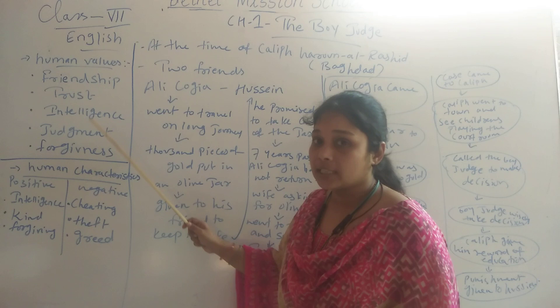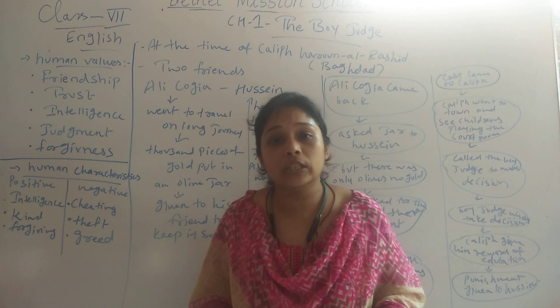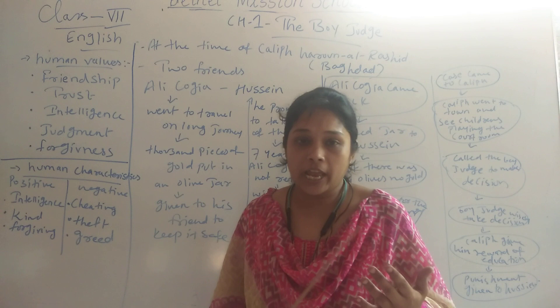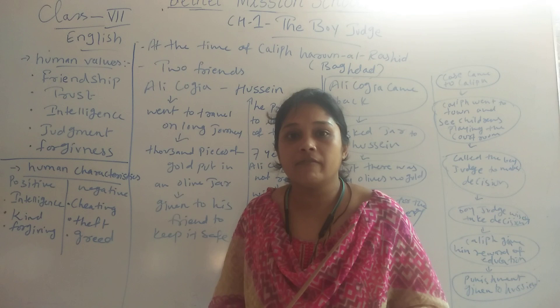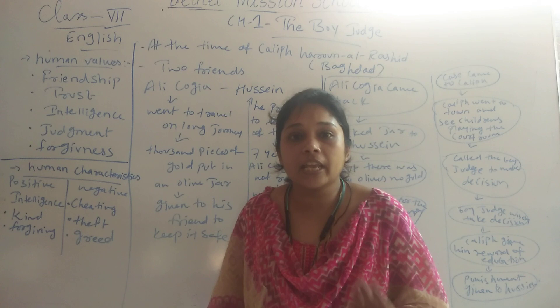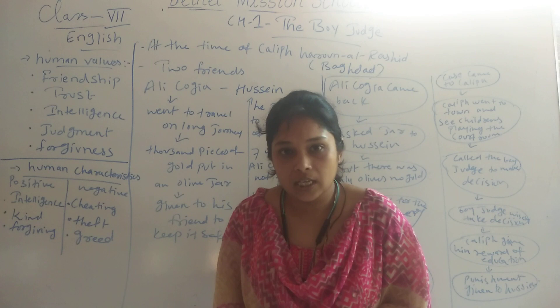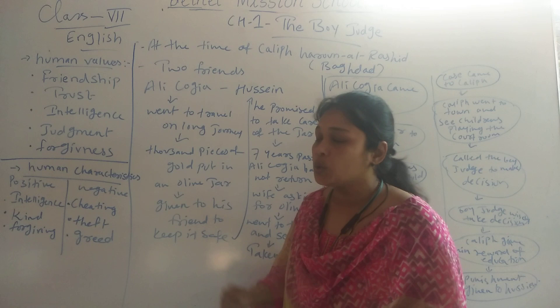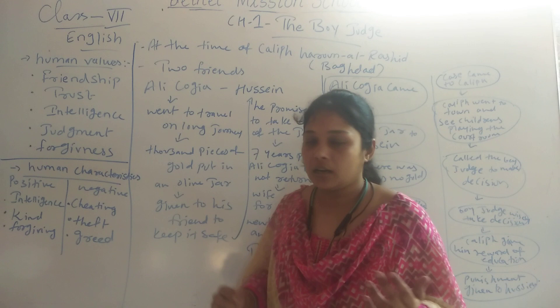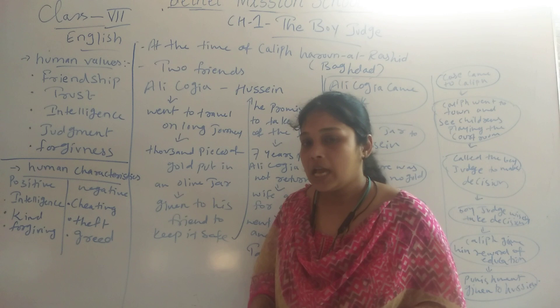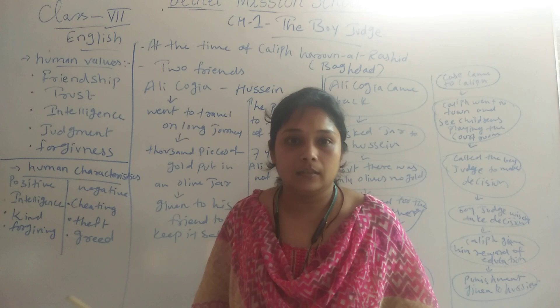Friendship is very important because we can share many things with our friends — our secrets, our sadness — and we can celebrate with our friends. Friends are very important in our life because we trust our friends. Intelligence is a very good positive human value through which we can lead our life perfectly. Proper judgment is also very compulsory, and forgiveness — when we forgive someone, we make our heart light. Forgiveness is a very kind virtue of human values.